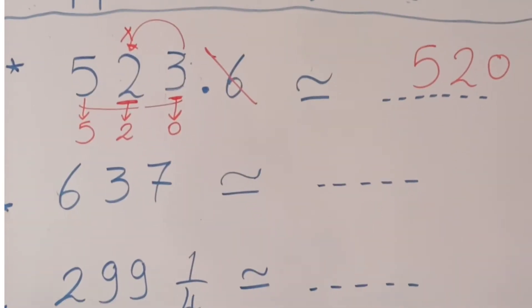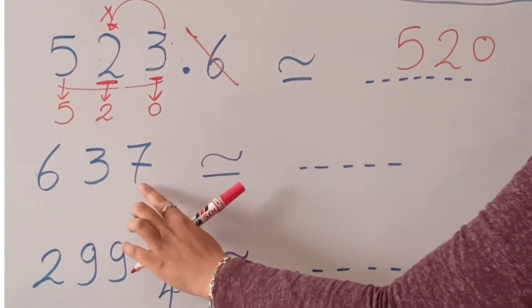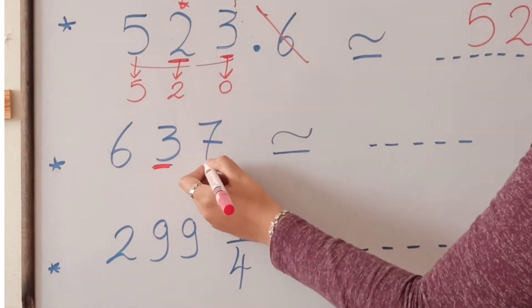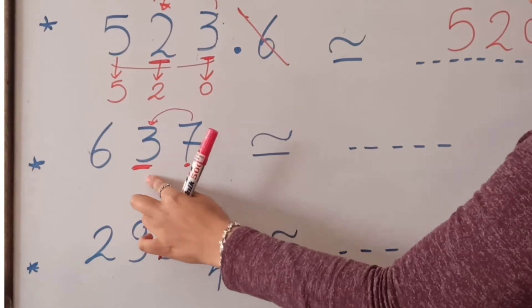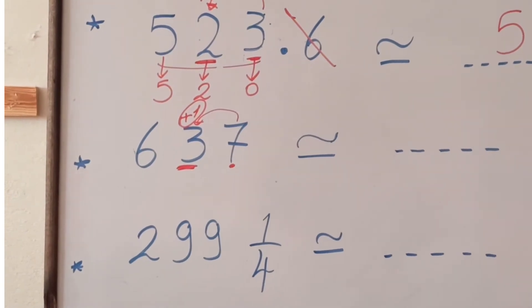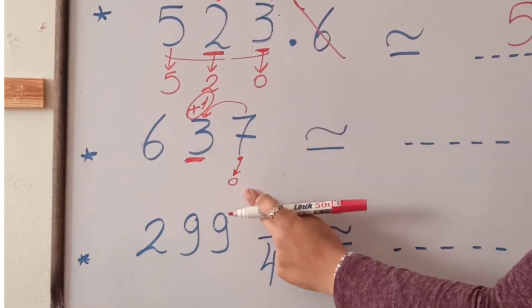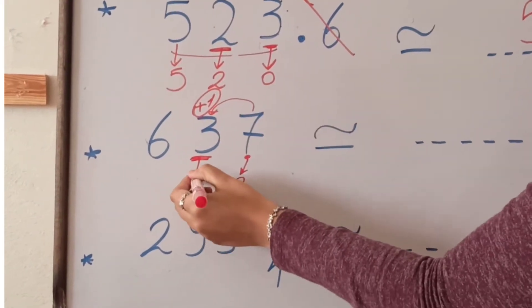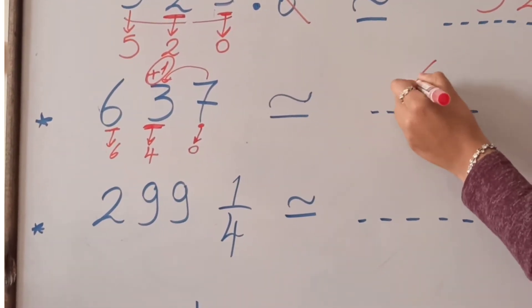Let's take another example. We have 637. We stop at the tens digit — that is the tens digit. We ask the digit to its right, which is 7. Is 7 poor or rich? 7 is rich, so it can help 3 by giving it 1. Then 7 will become 0, and 3 takes that 1: 1 plus 3 equals 4. We bring down 6, so the answer of the approximation will be 640.